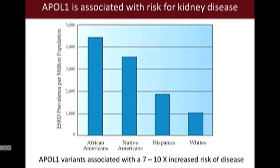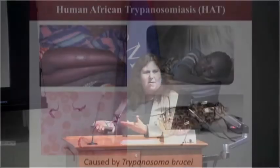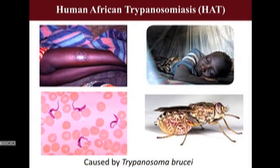The next example is the APOL1 gene, common in West Africa. Genome-wide association studies found it was associated with kidney disease in people of African descent, which is very common in African-American populations relative to others. Having two copies of the risk variants confers up to a tenfold increased risk of kidney disease—a huge risk factor. It turns out these mutations also play a role in resistance to the trypanosome parasite that causes sleeping sickness, a pattern very similar to what we see with sickle cell anemia.